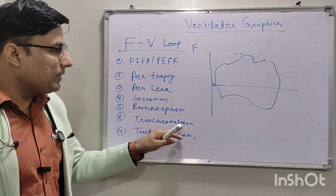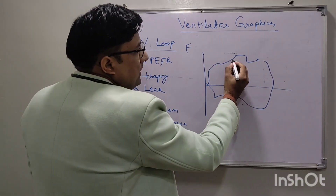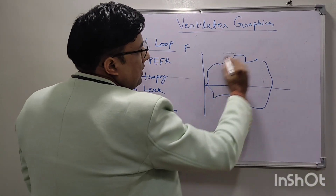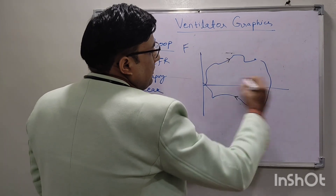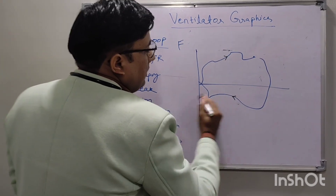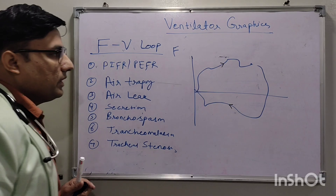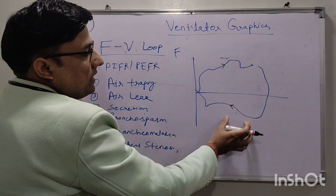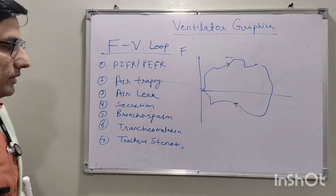If tracheomalacia is present, both the inspiratory and expiratory curves will be zigzag — they will look crumbled. This zigzag pattern in both inspiratory and expiratory curves is characteristic of tracheomalacia.